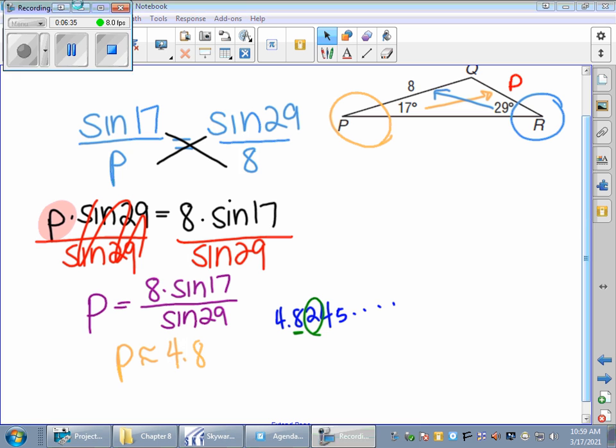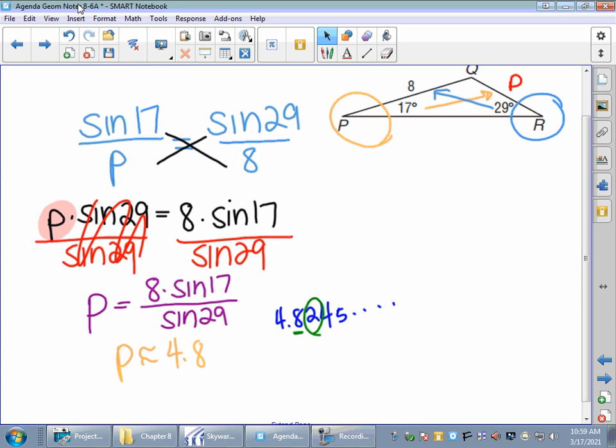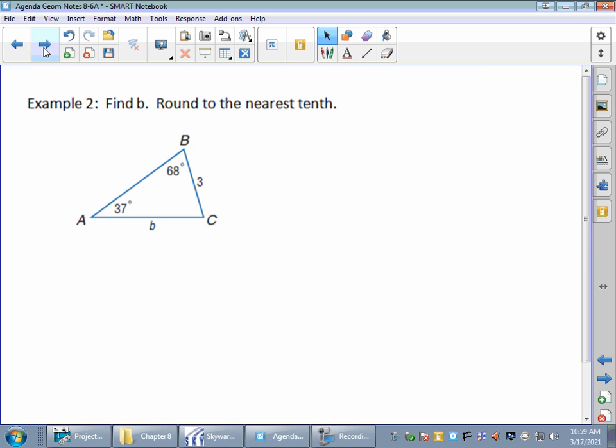We always have problems where we can look for an angle. Let's do one more of these. Let's do example two. Find B, round to the nearest tenth. We know that. So here's B.